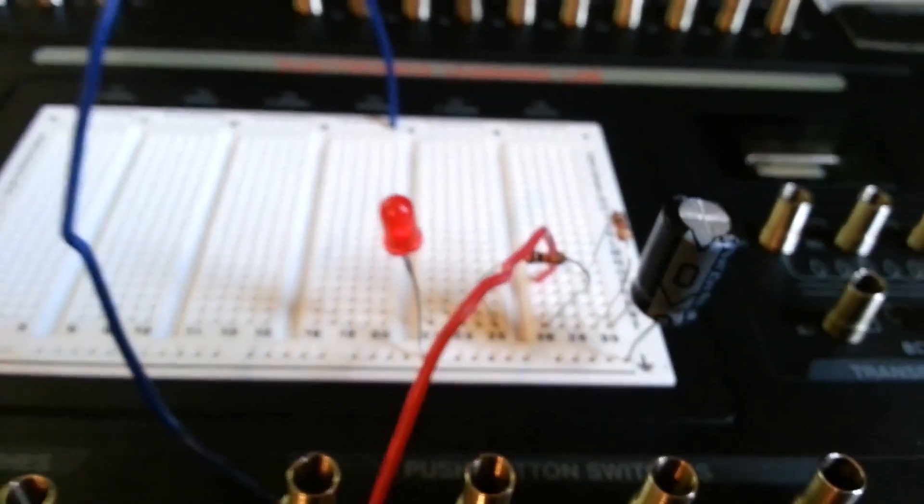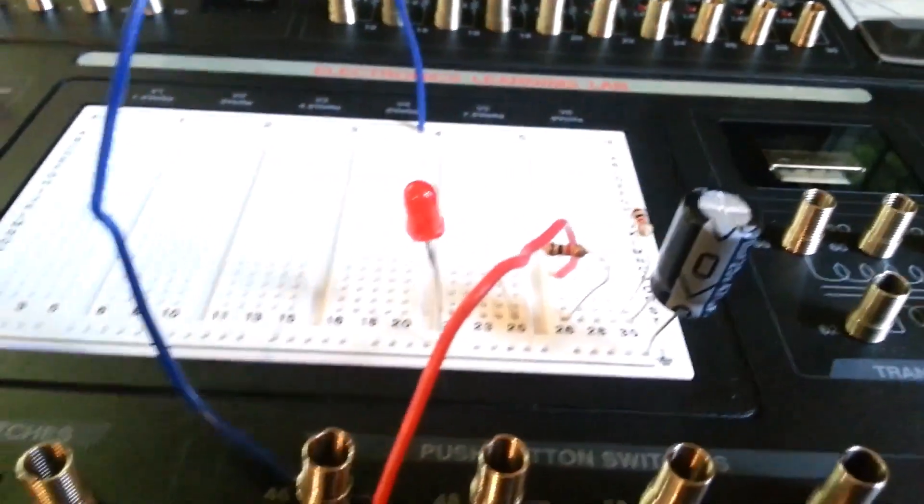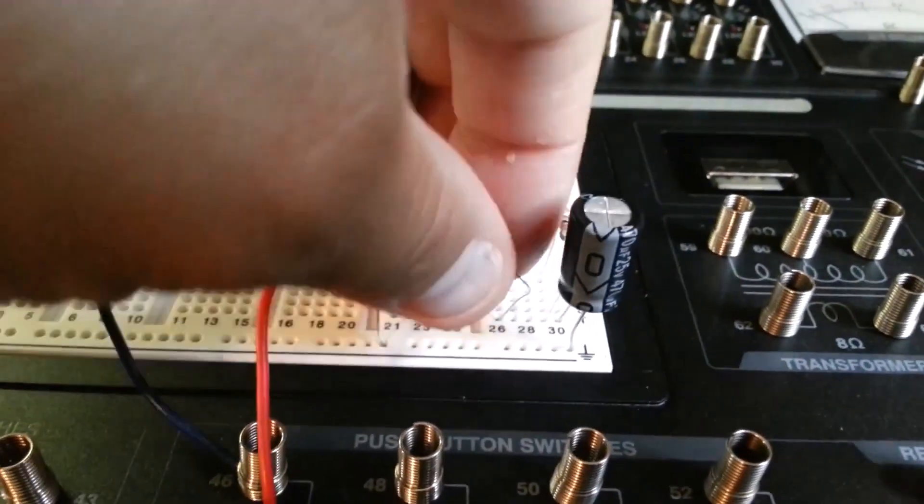Now what I'm going to do is I'm going to replace this resistor right here by one that's a little more ohms. Turn the unit off. Take this out.